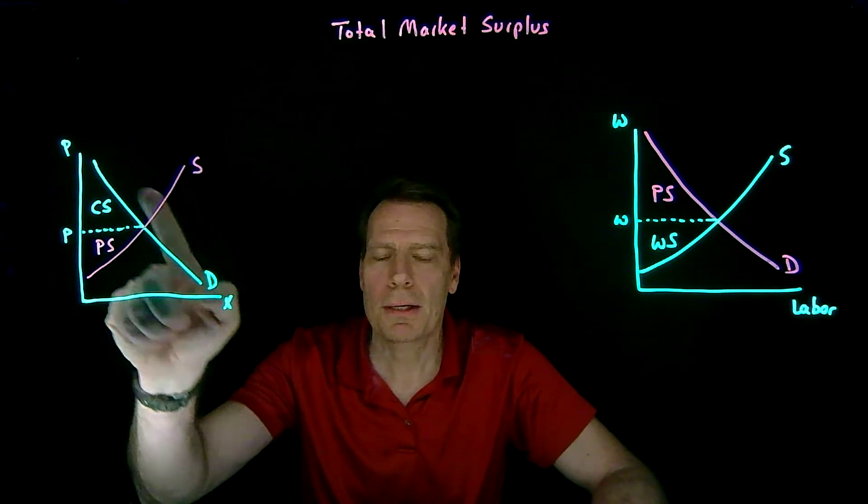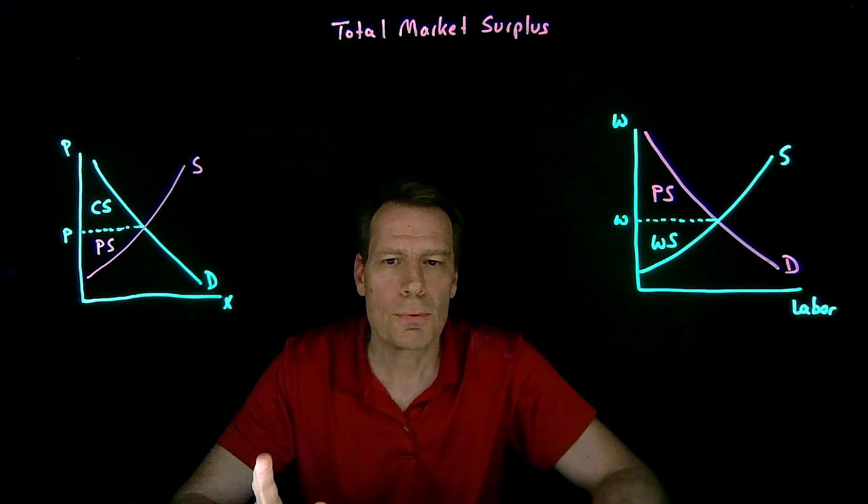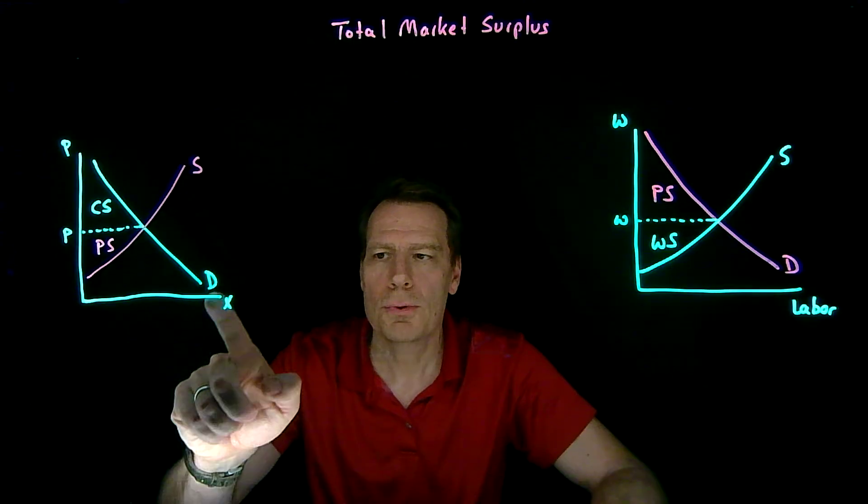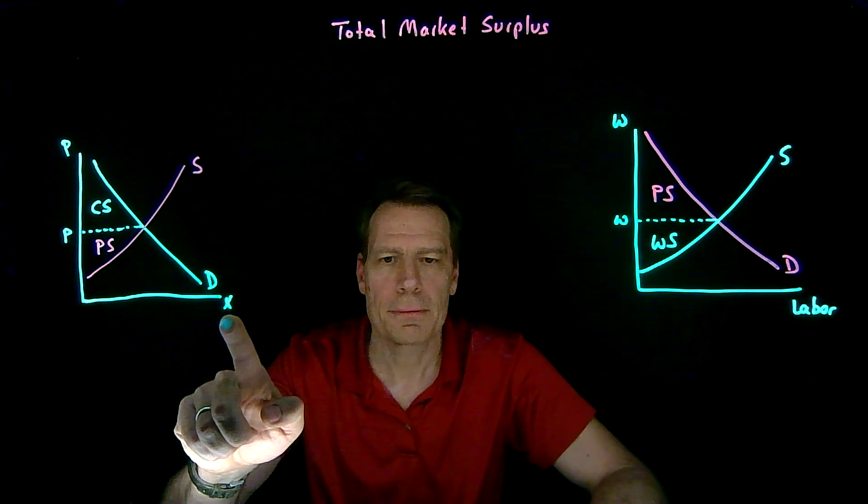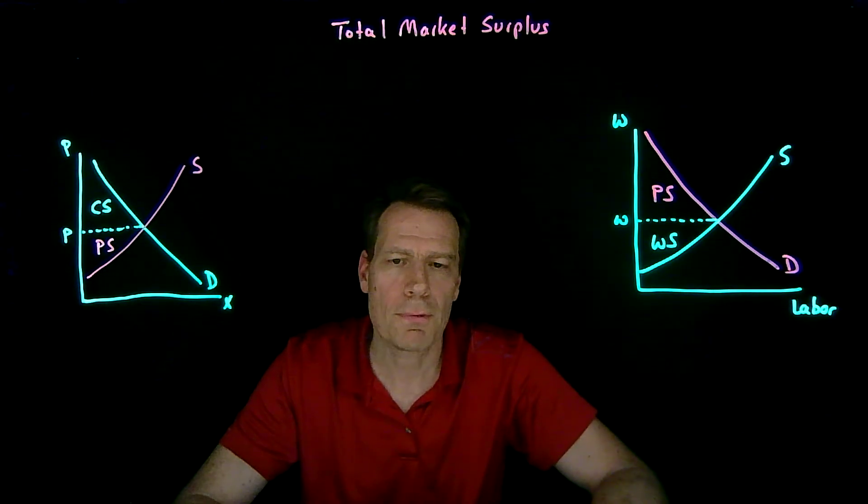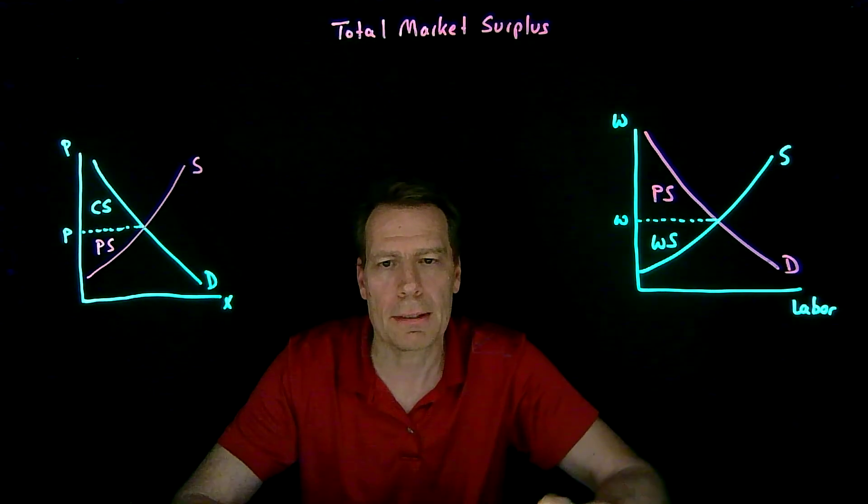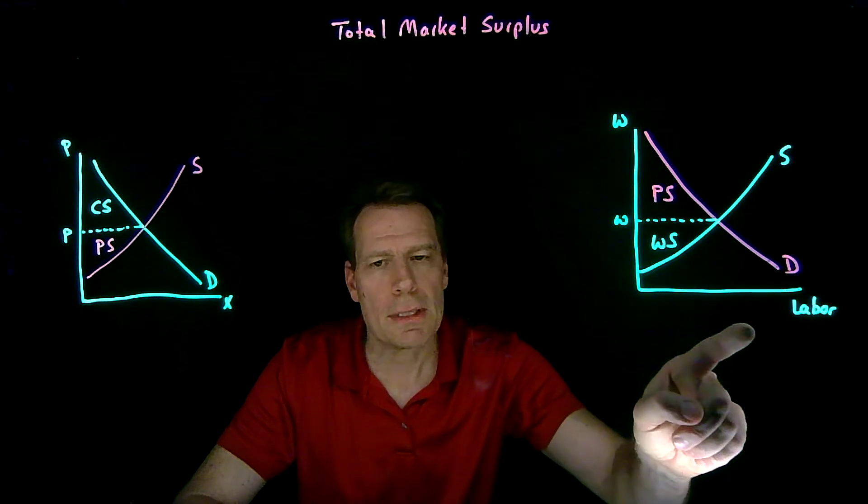So this picture is technically correct only when we've assumed that consumer tastes are quasilinear in x. Then the picture works perfectly, otherwise it becomes more complicated. The same is true in this case.